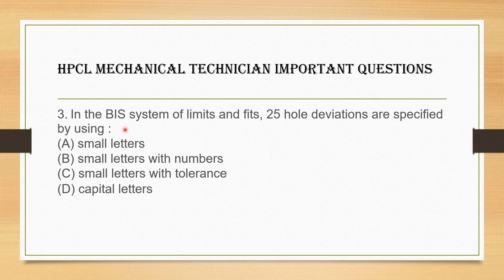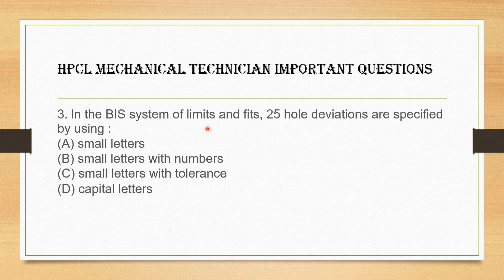In the BIS system of limits and fits, different systems exist. In the BIS system, 25 whole deviations are specified. The whole deviations are represented using 25 whole deviations. The answer is D — represented by capital letters.